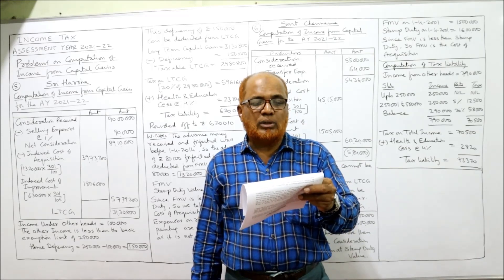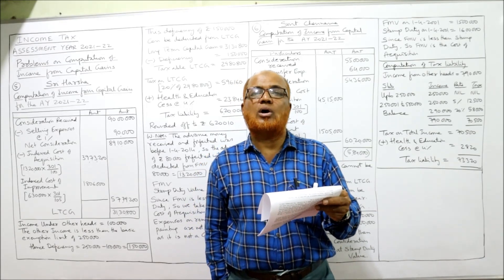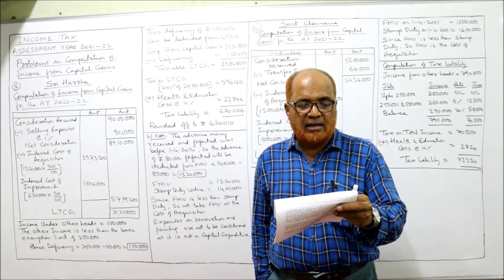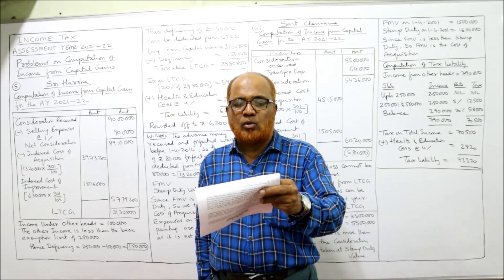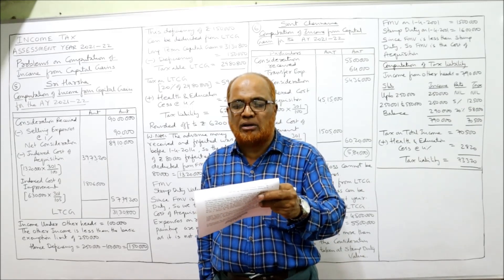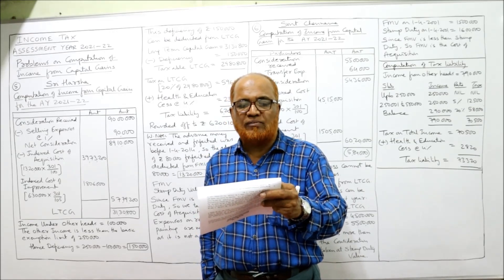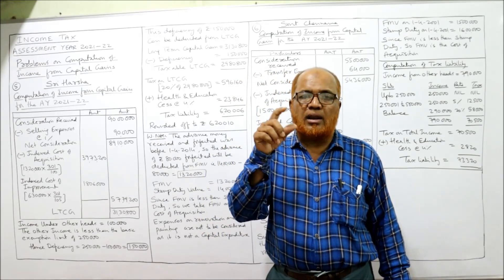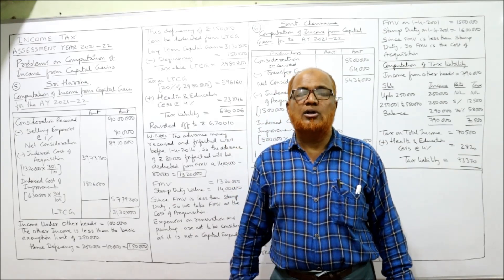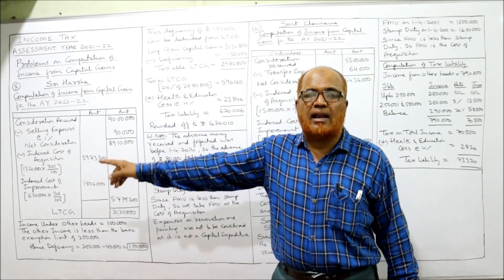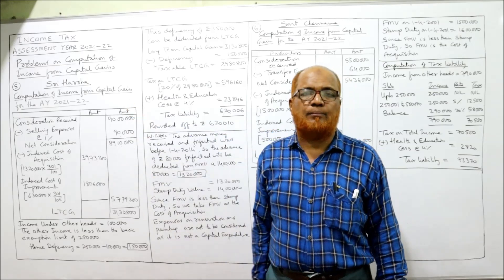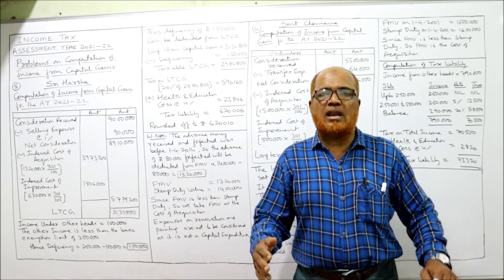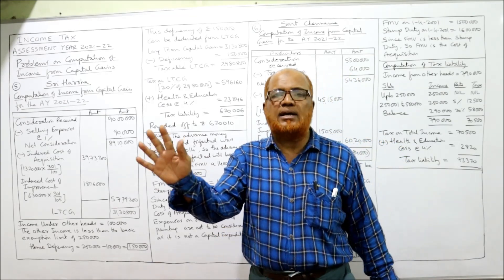During the previous year 2002-2003, one more floor was added to the building at a cost of Rs. 6,30,000 — this is the cost of improvement, with cost inflation index 105. During 2008-2009, Rs. 3 lakh was spent for renovation and painting, with cost inflation index 137. Any expenditure incurred on renovation and painting should not be considered while calculating income from capital gain, because the Income Tax Act says this renovation and painting is a revenue expenditure, not a capital expenditure.